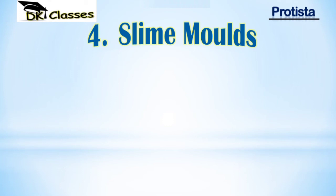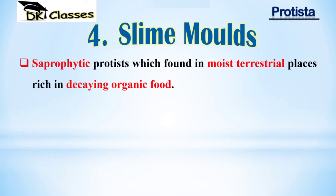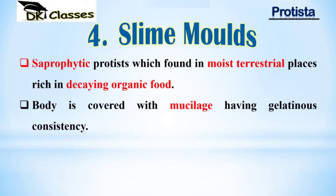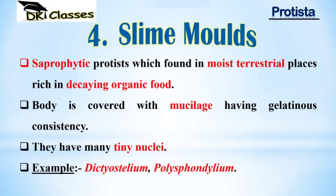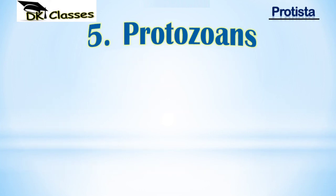The fourth phylum is slime molds, which are saprophytic Protista found in moist terrestrial places rich in decaying organic matter. They act as decomposers, eating and killing other organisms. Their body is covered with mucilage having a gelatinous consistency, and they have very tiny nuclei. Examples include Dictyostelium and Polysphondylium.